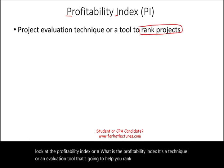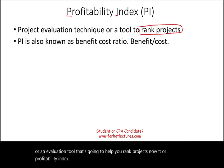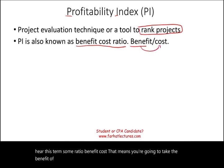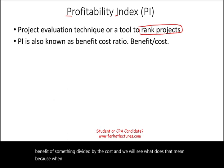PI, or profitability index, is also known as the benefit-cost ratio. Every time you hear this term — benefit-cost ratio — it means you are going to take the benefit of something divided by the cost. We will see what that means, because when you say benefit-cost ratio you are dividing those two figures, starting with benefit.